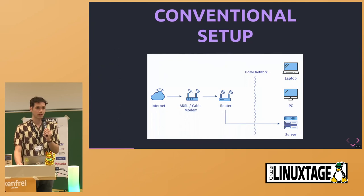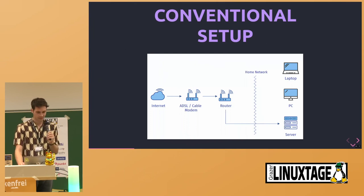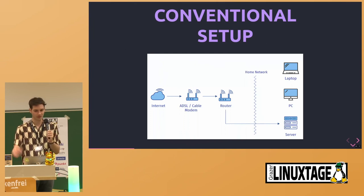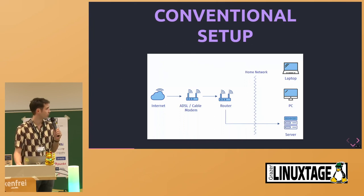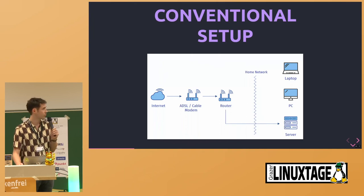So let's talk about a conventional setup that you would perhaps have to expose some services running on a home server. Usually the internet comes into your home via fiber optic or copper cable to your modem or router. Some of you may have a public IP at home, but most don't, so a lot of people rely on port forwarding from the router to their home server — which is kind of insecure.